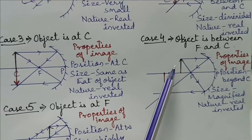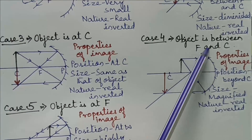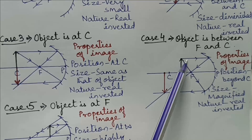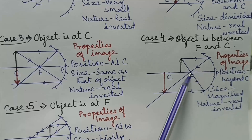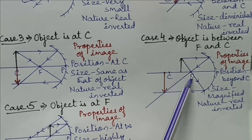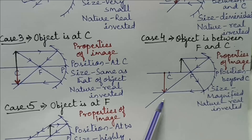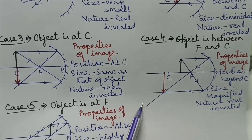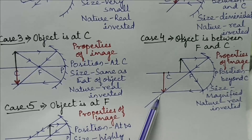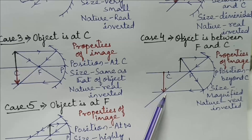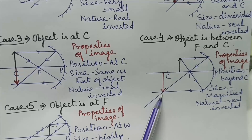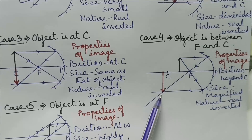Case 4: When the object is placed between focus and center of curvature. The first ray coming parallel to principal axis after reflection passes through focus. The second ray passing through focus after reflection moves parallel to principal axis. The two rays meet at a point and the image is formed beyond center of curvature. The size of image is magnified and the nature is real and inverted.